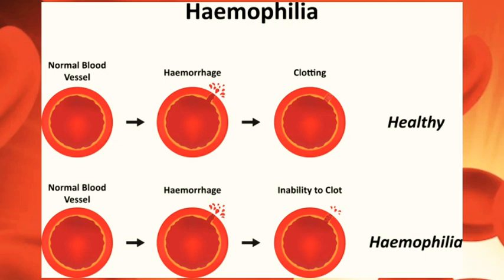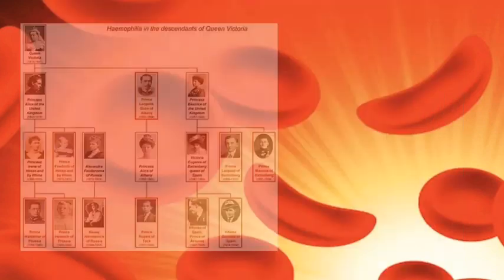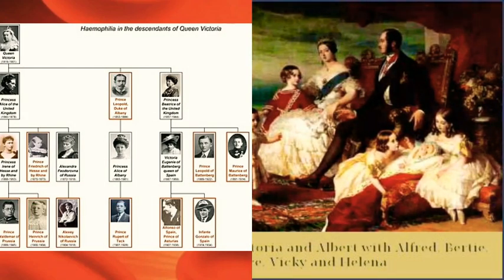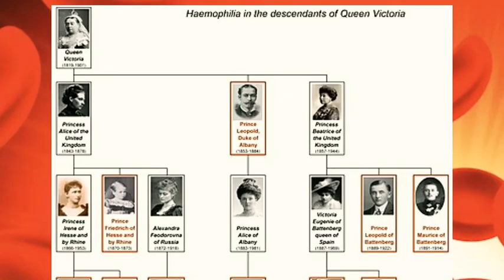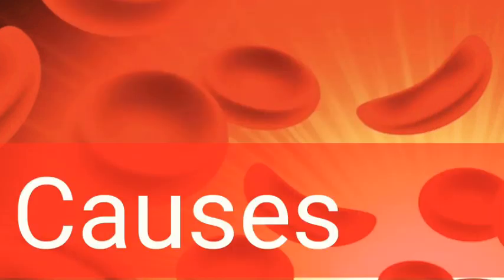A process in our body known as the coagulation cascade normally stops bleeding. Blood platelets coagulate at the wound site to form a clot, then the body's clotting factors work together to create a more permanent plug. A low level or absence of these clotting factors causes bleeding to continue. This disease is also known as the royal disease because the hemophilia gene was passed through Queen Victoria's family, who was Queen of England in the 19th to 20th century. Queen Victoria's gene for hemophilia was caused by spontaneous mutation, and many of her sons and daughters were carriers or affected.